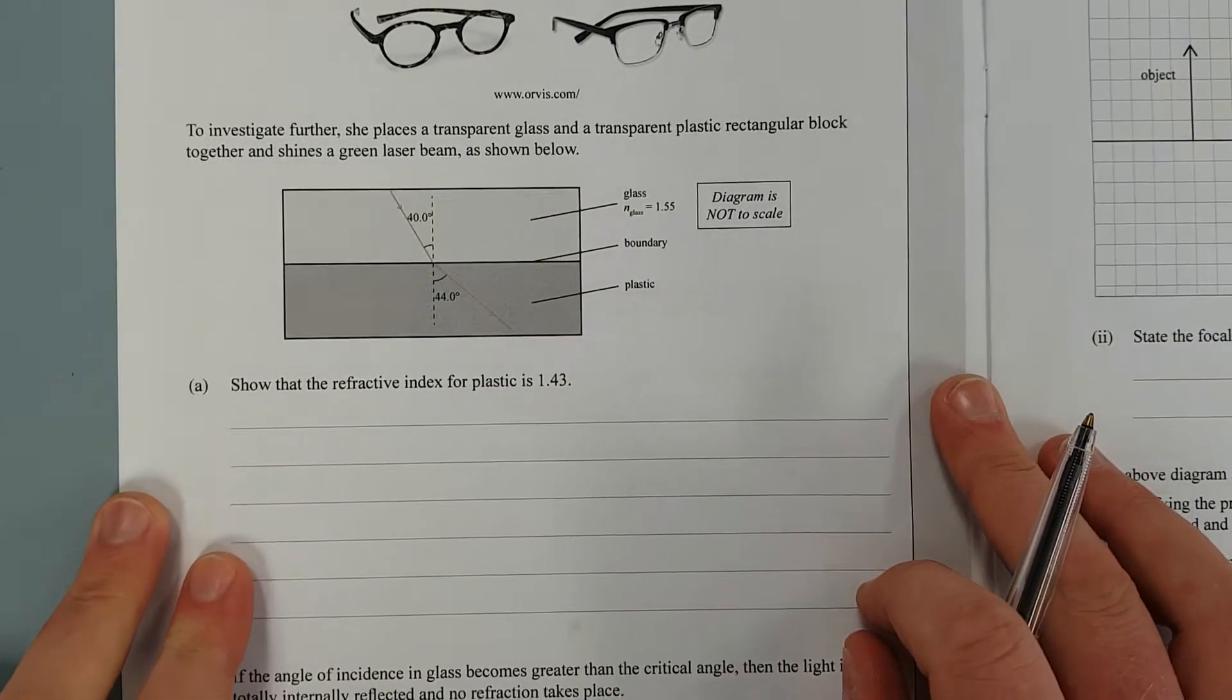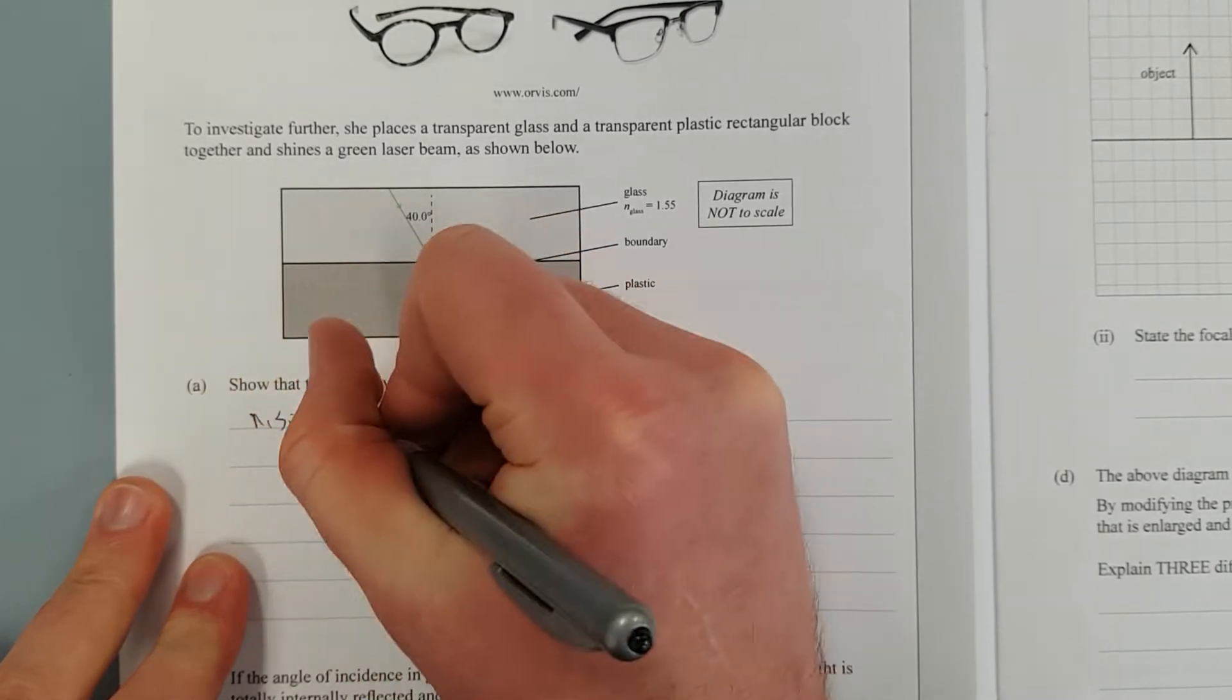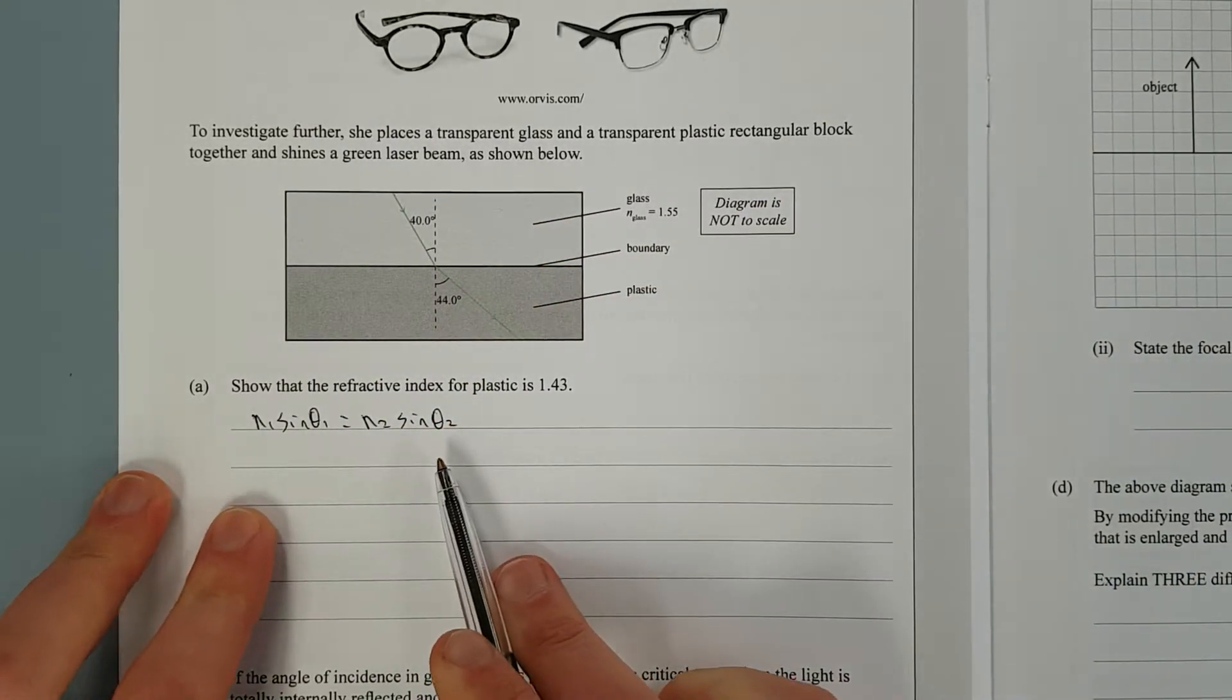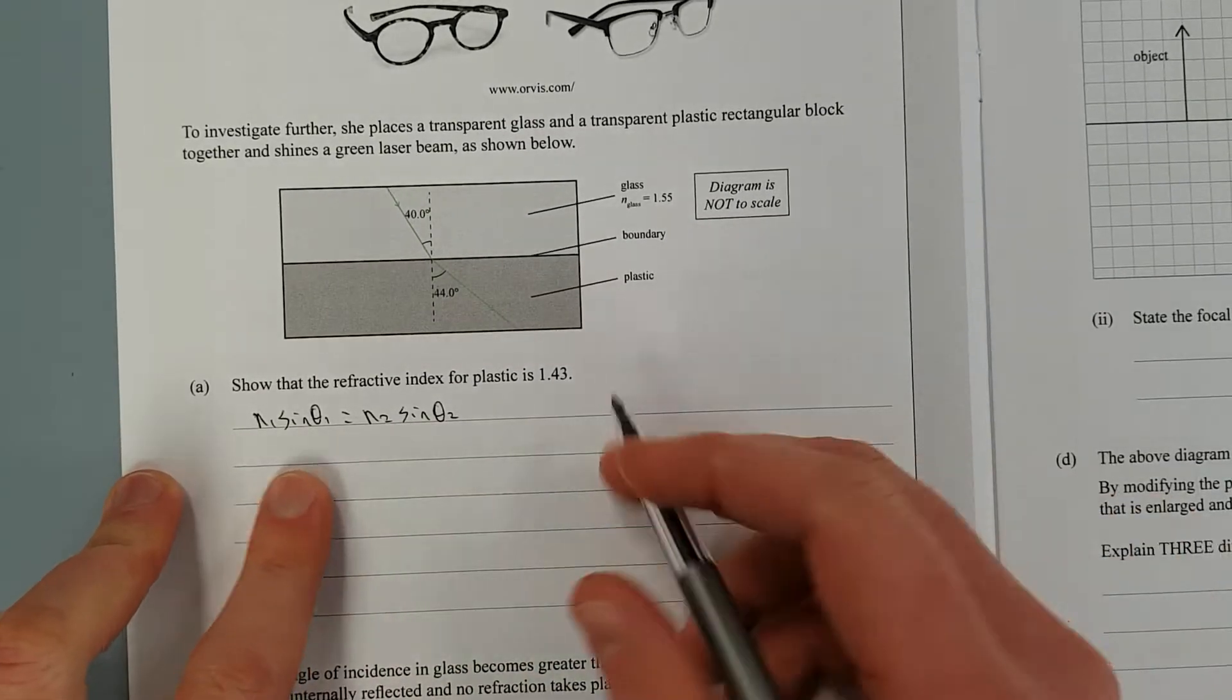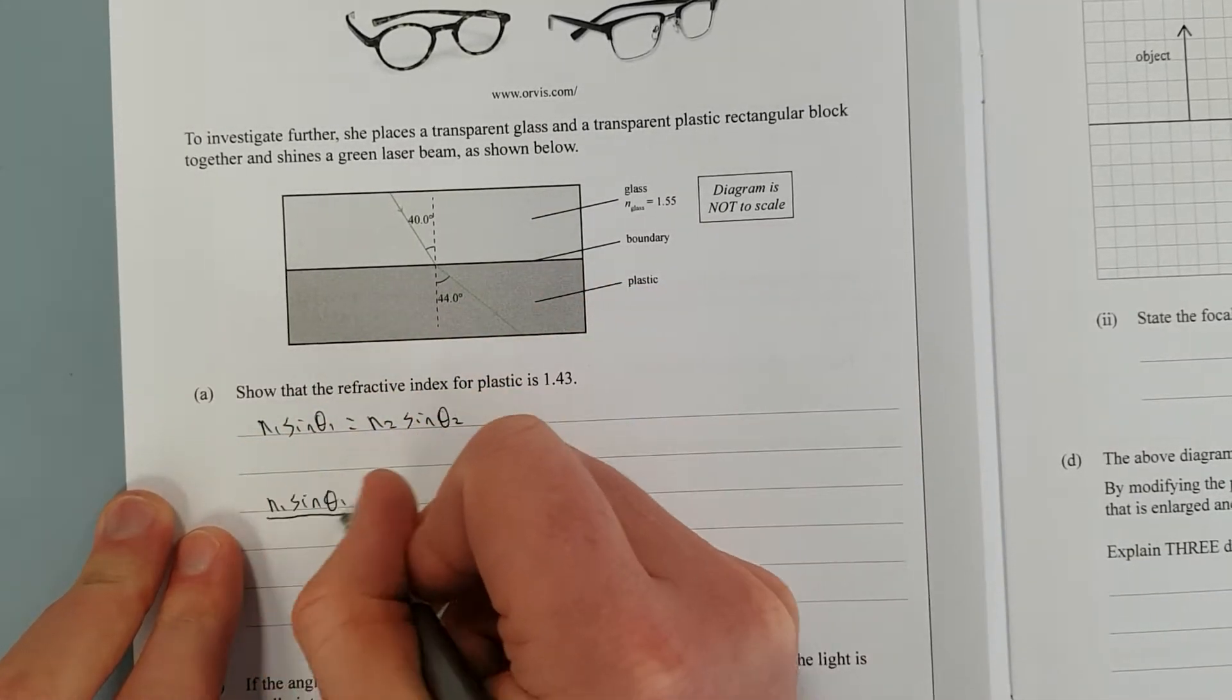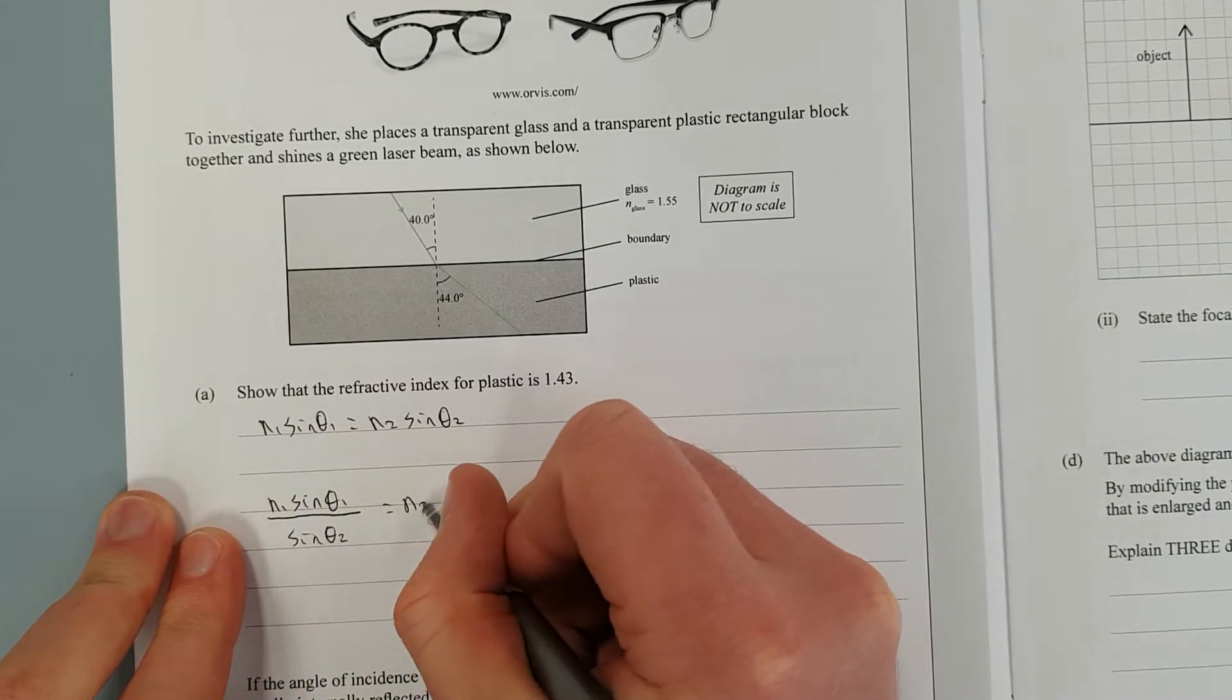So on your formula sheet you'll find Snell's Law. N1 sin θ1 is equal to N2 sin θ2. What we're trying to do is show that this N2 is equal to that. So let's just assume algebra and rearrange. N1 sin θ1 divided by sin θ2 is equal to N2.